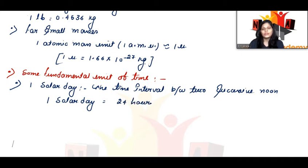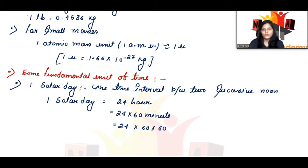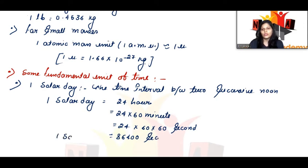24 hours means 24 into 60 minutes, which means 24 into 60 into 60 seconds. If you solve this, you get 86400 seconds. So 1 solar day equals 86400 seconds.